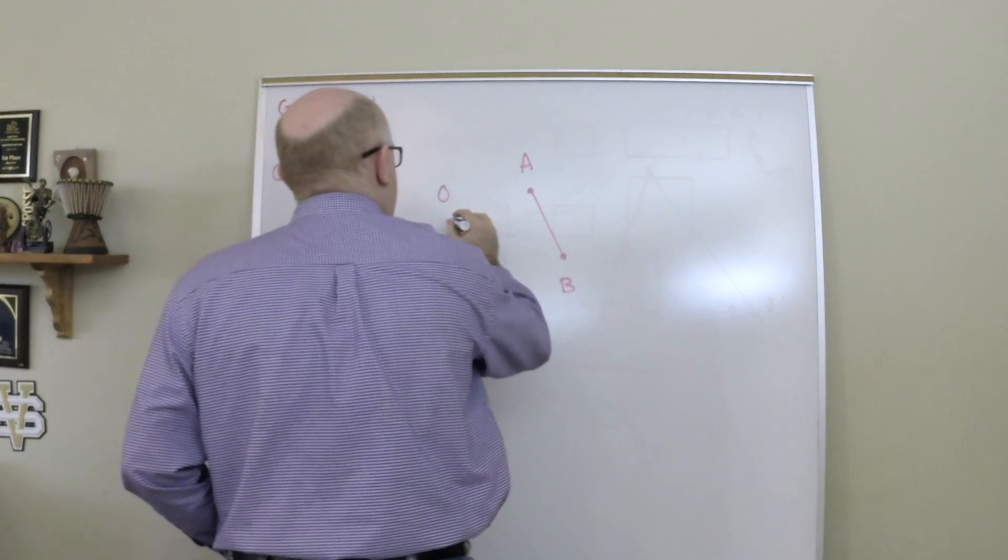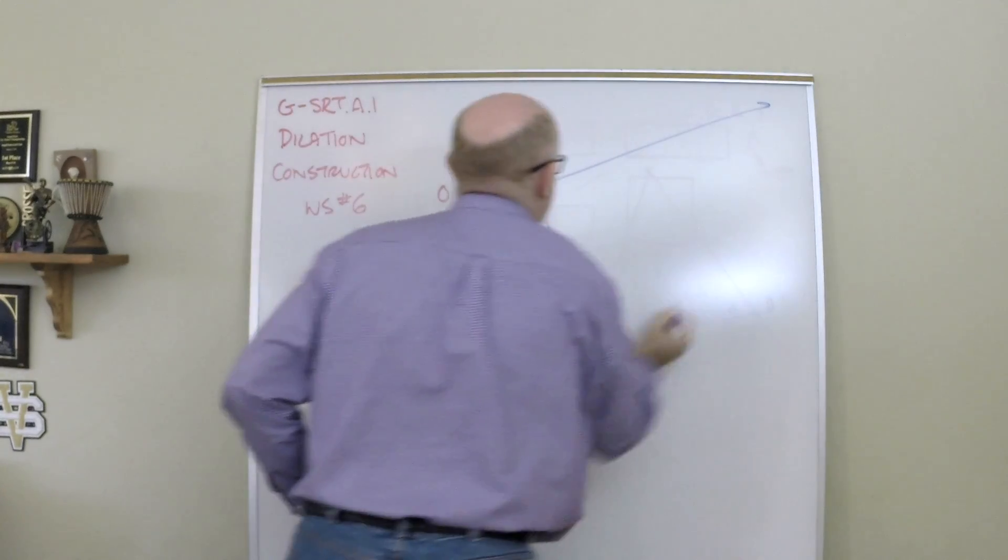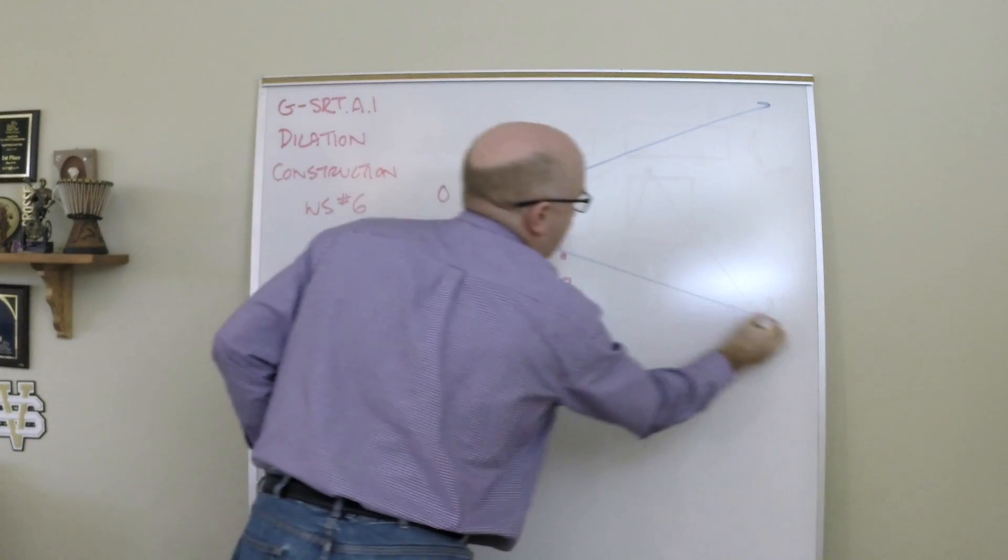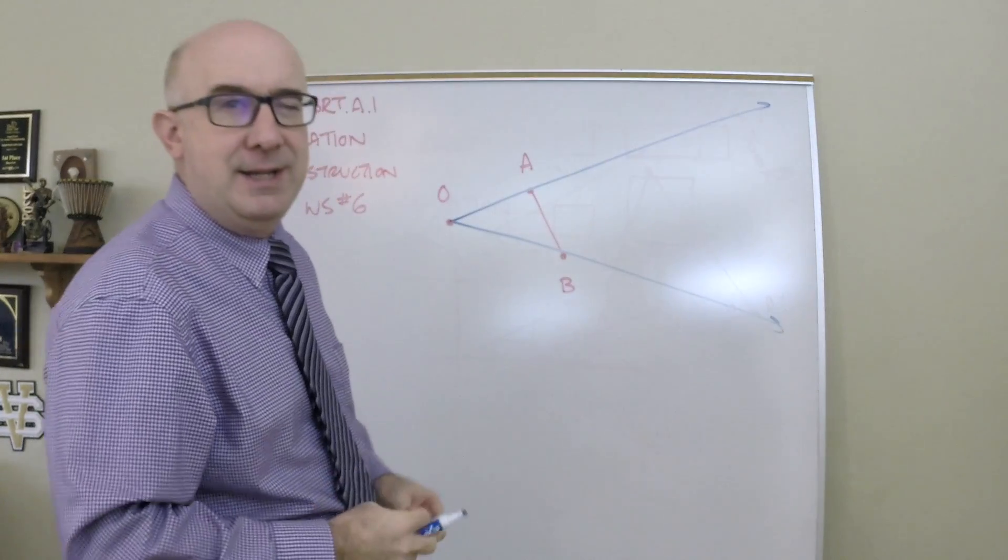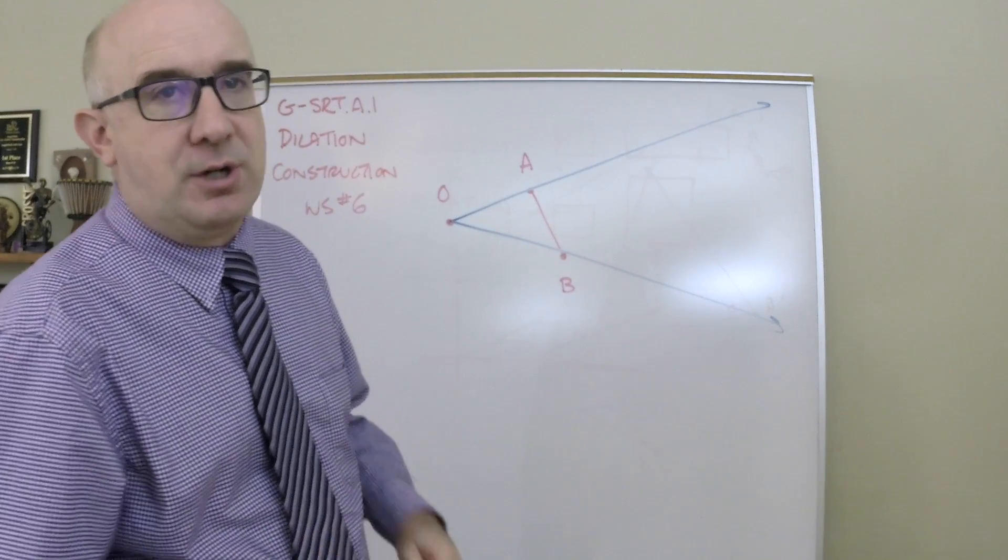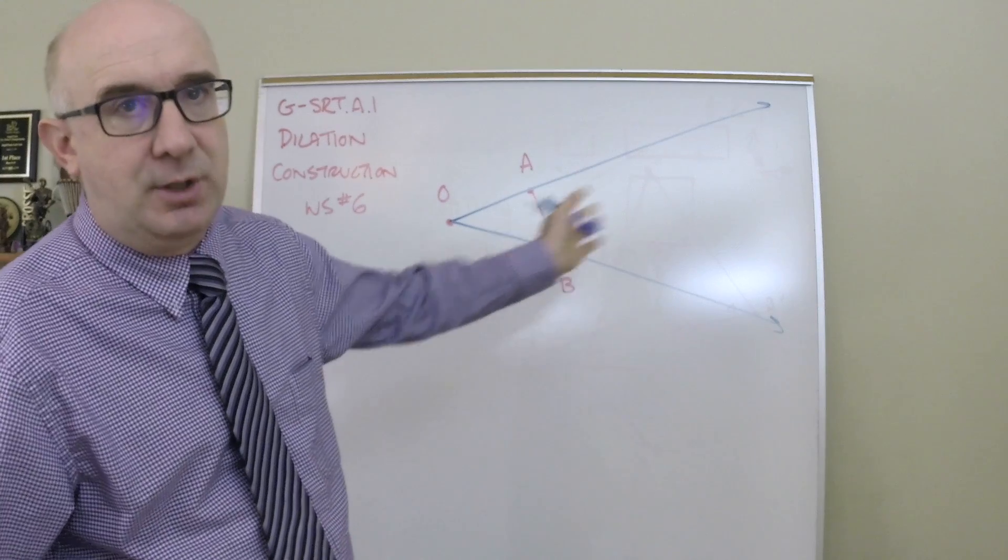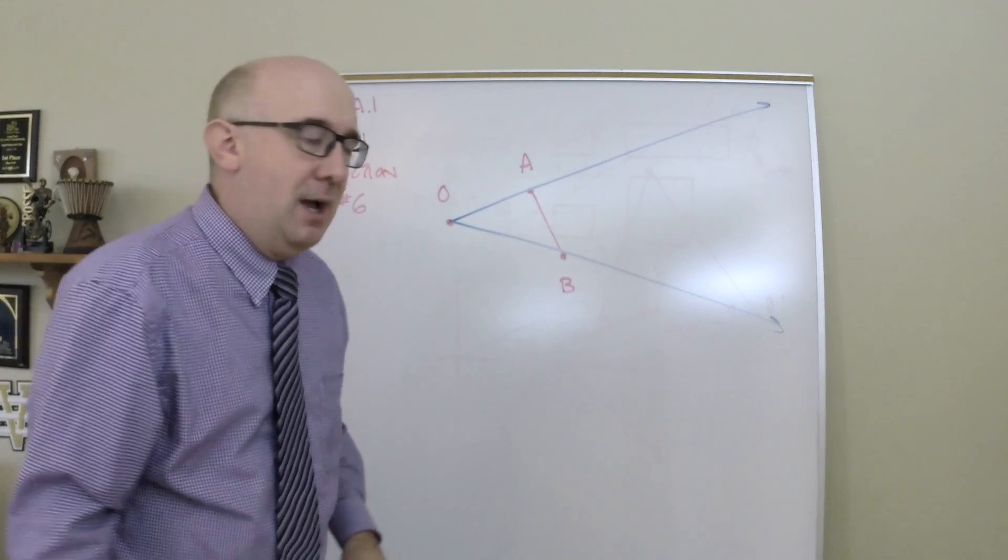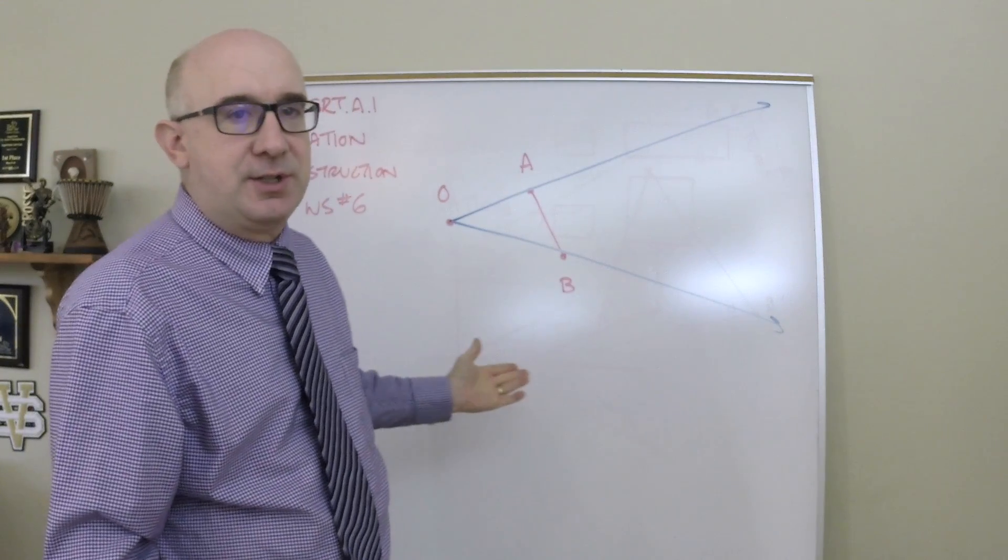You always begin by creating your rays. All dilations take place along rays, and then you're going to use your compass to basically measure whatever that is.